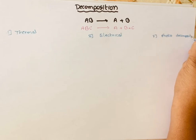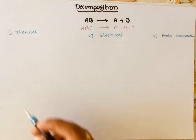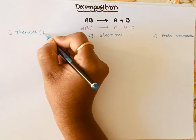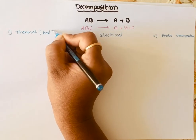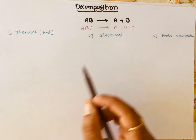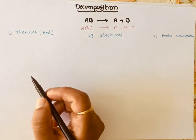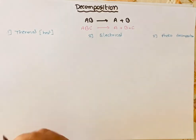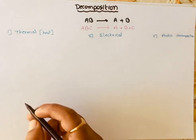Let's start with thermal decomposition. Thermal means we have to heat the reaction. In order for a particular compound to undergo dissociation, we have to heat that compound, and then it will undergo dissociation into different simple compounds or elements.